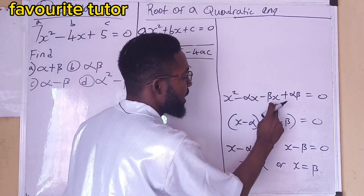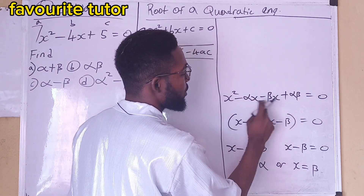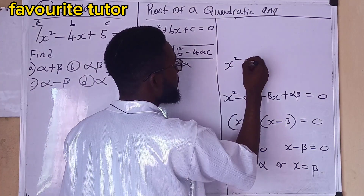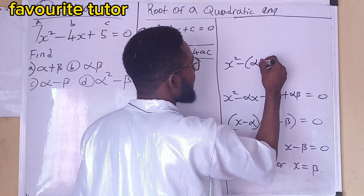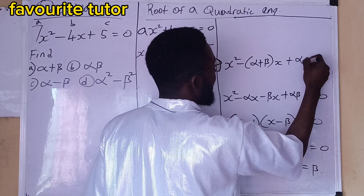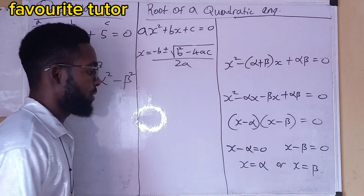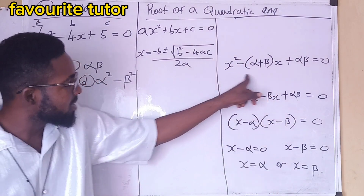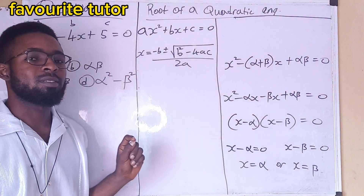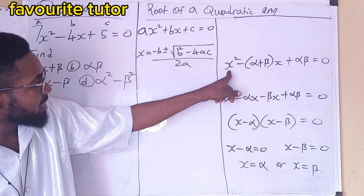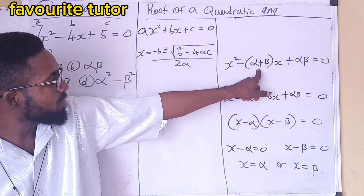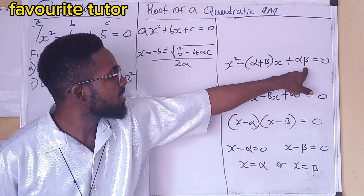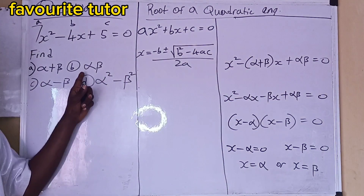Now, looking at what we have here, there are like terms — we have common factors, so I can factorize. This gives us x squared minus (alpha plus beta)x plus alpha·beta equals zero. Now from the roots, I can easily derive the quadratic equation. The second term is the sum of the roots, and the constant term is the product of the roots.